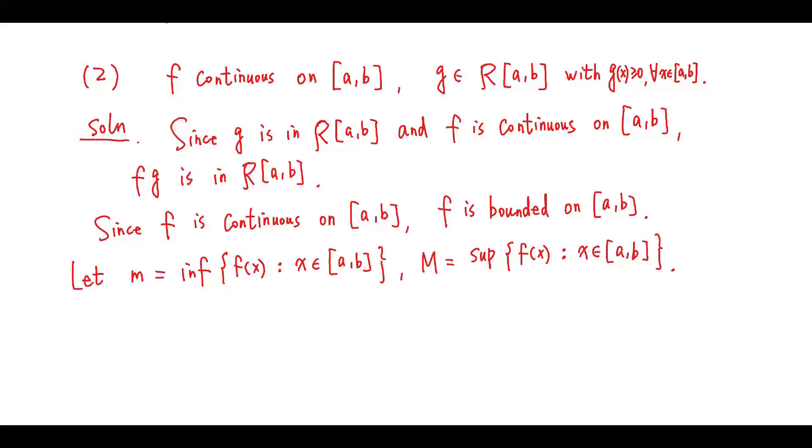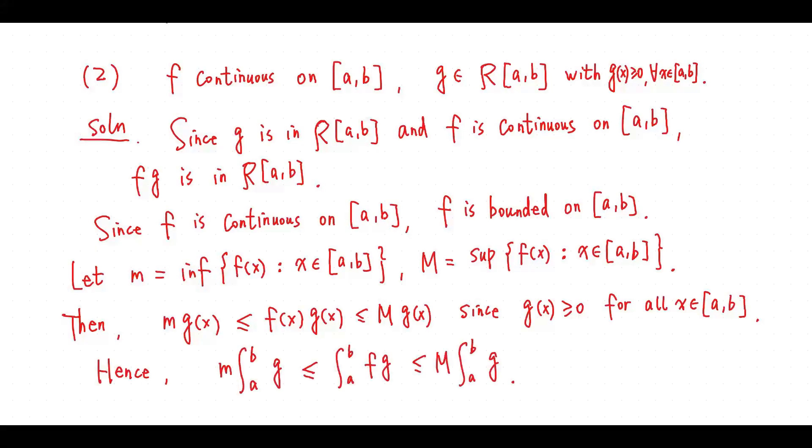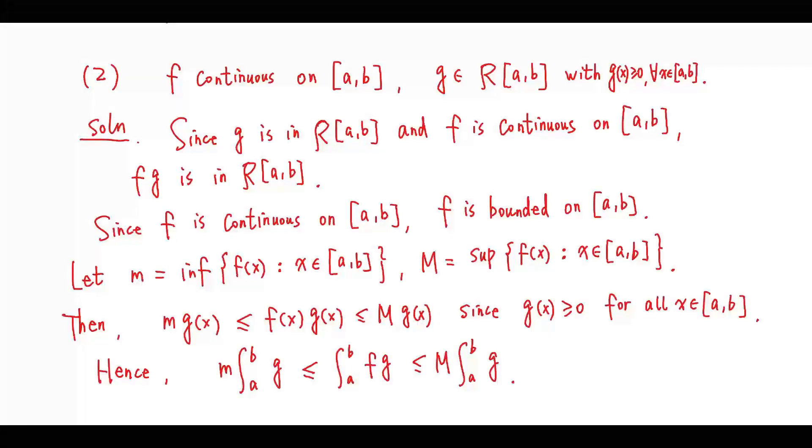Let m be the infimum of f(x) and M be the supremum of f(x) for x in [a, b]. Then f(x)·g(x) is between m·g(x) and M·g(x) for all x in [a, b]. This leads to the corresponding inequality for integrals.